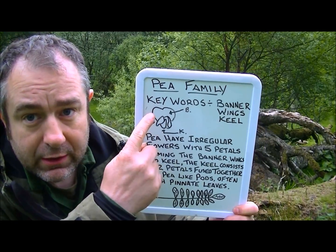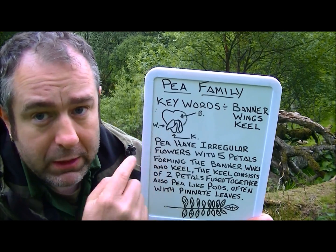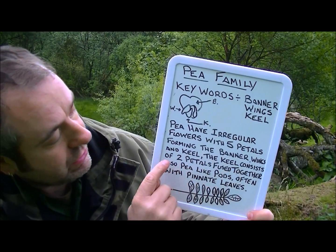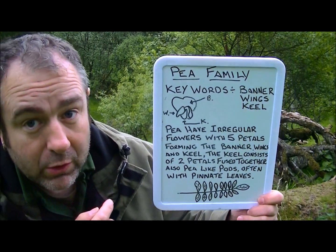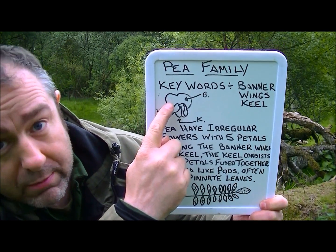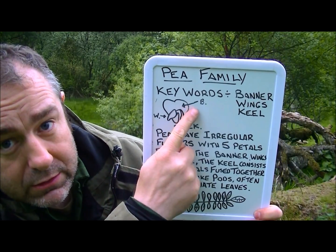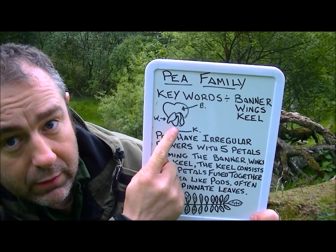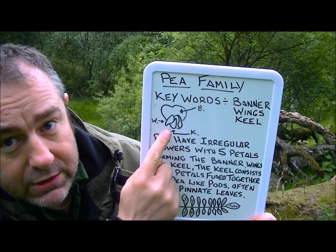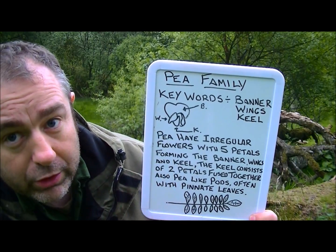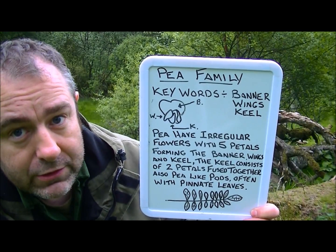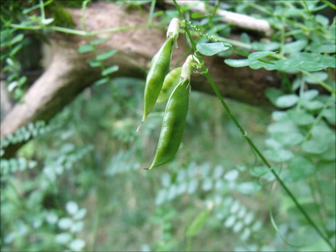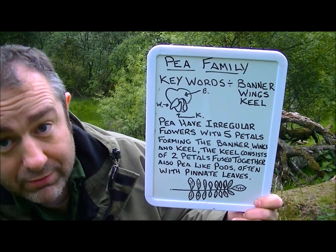What does that mean? The pea family have irregular flowers with five petals forming in the banner, wings, and a keel. The keel consists of two petals fused together. What we have at the back is the banner, as you can see in my diagram — it's got the bee next to it. Then on either side we have the wings, and inside, if you part the wings, will be like the keel of a boat, or a canoe.